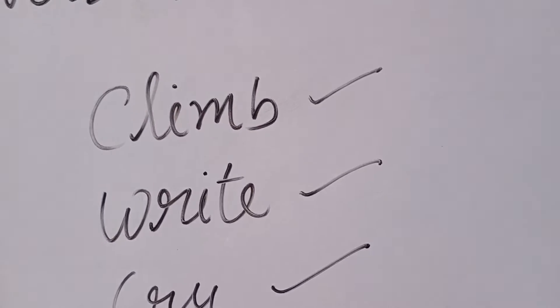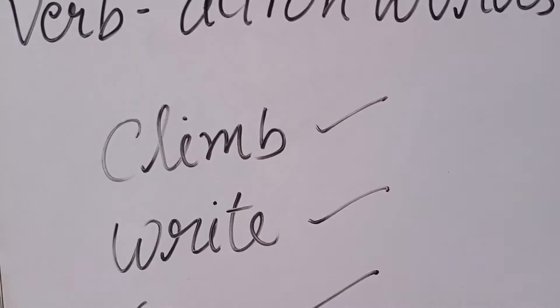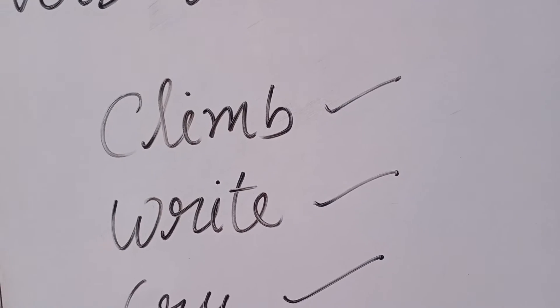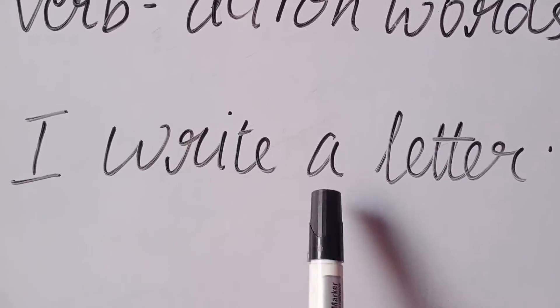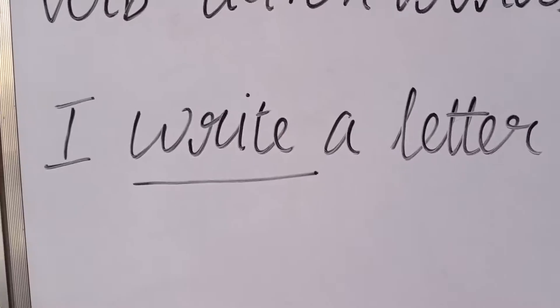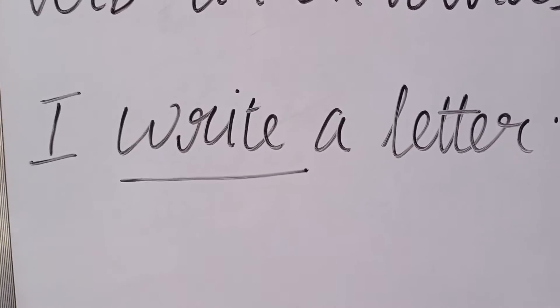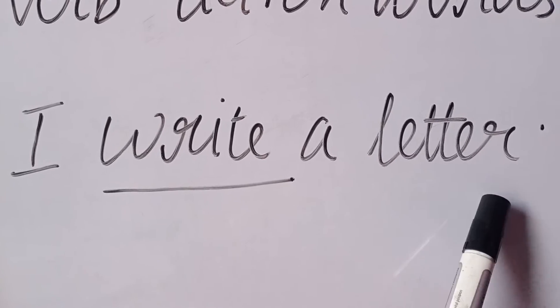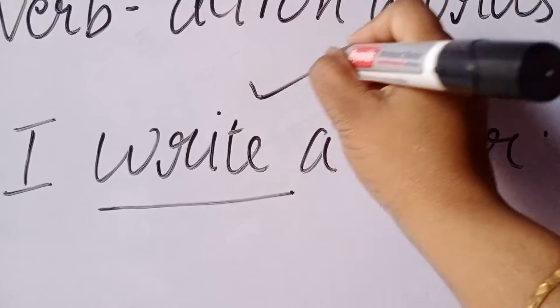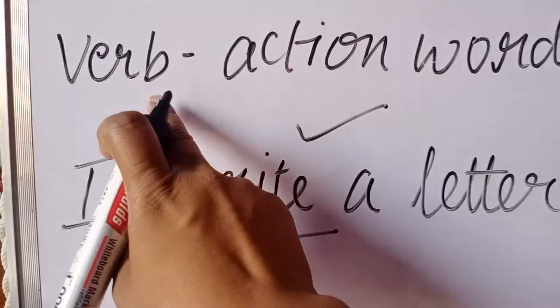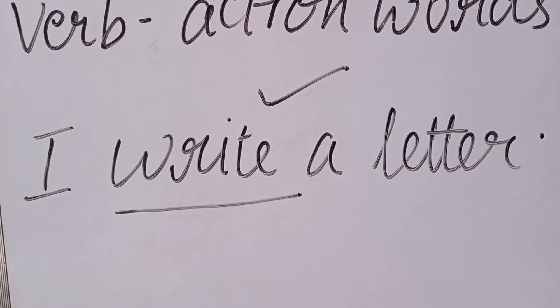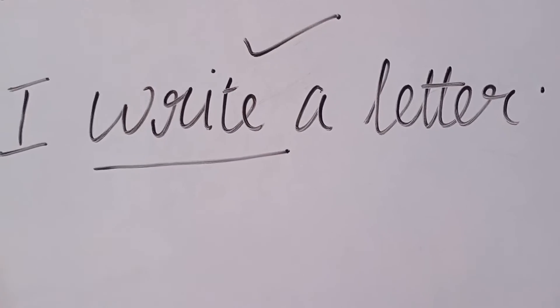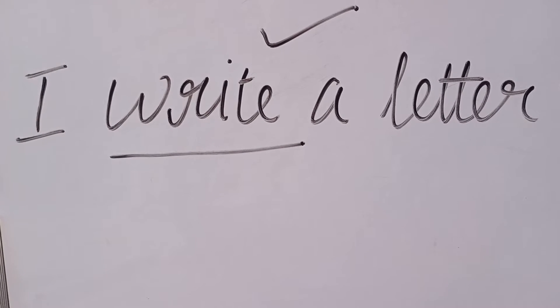For example, 'climb' means chernah — if I say 'I climb a tree,' so 'climb' is an action word. Next example: 'I write a letter.' In this sentence, the word 'write' tells us what 'I' is doing. This word is an action word, it is a verb. Words in sentences that tell us what the subject is doing — those are our verbs.